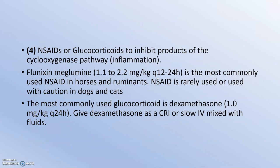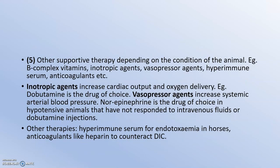NSAIDs or glucocorticoids are used to inhibit the production of cyclooxygenase pathway mediators — extra inflammatory reactions are suppressed. NSAIDs with less analgesic and blood-clotting effects are preferred. Flunixin meglumine is very commonly used as an NSAID in horses and ruminants, and NSAIDs should be used rarely or with caution in dogs and cats. The steroid mainly used is dexamethasone. Supportive therapy includes vasopressor agents, inotropic agents, anticoagulants, and combat-sepsis agents.